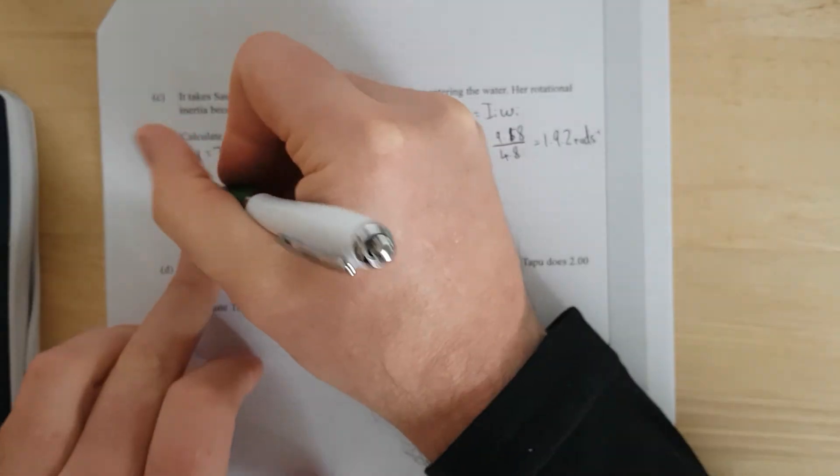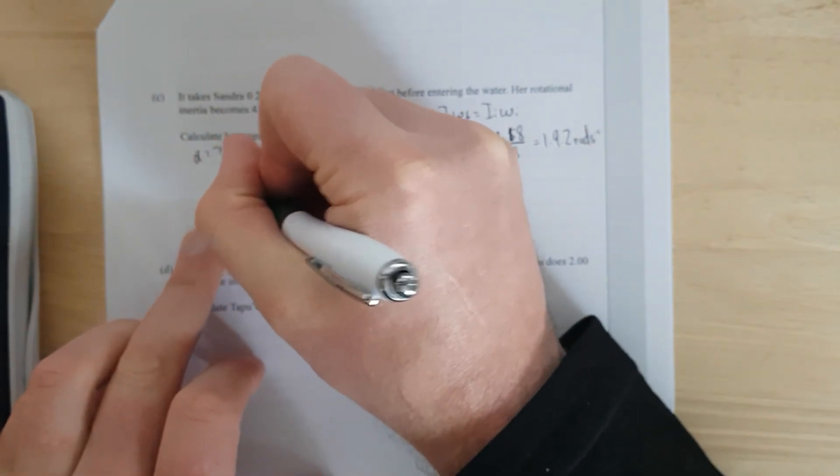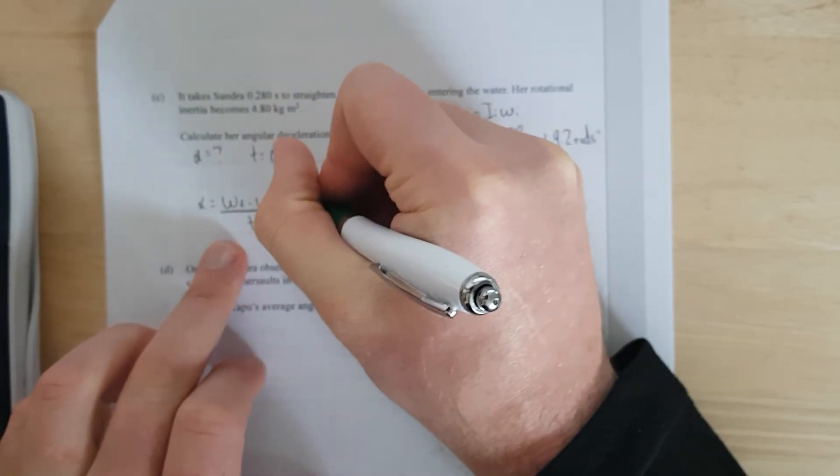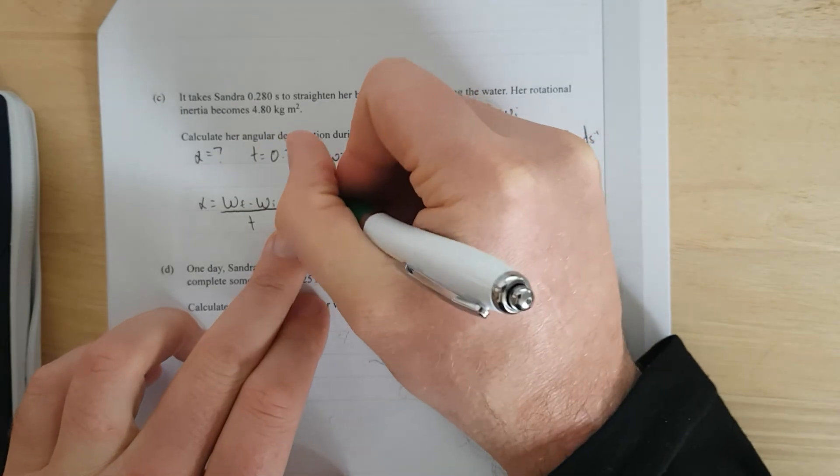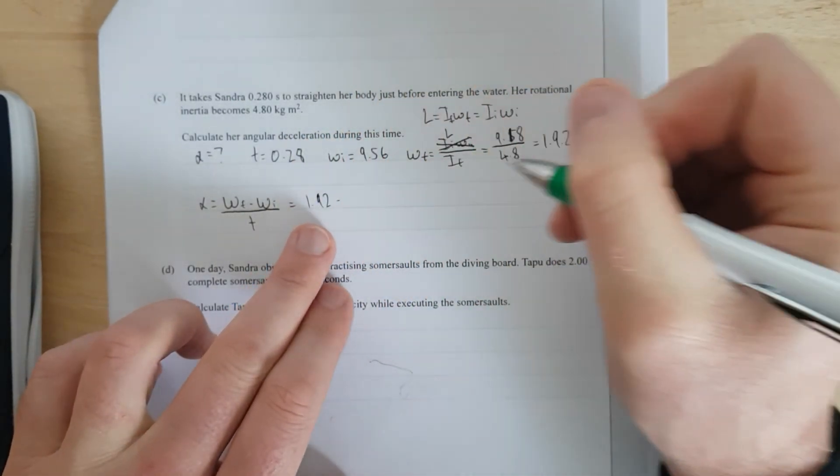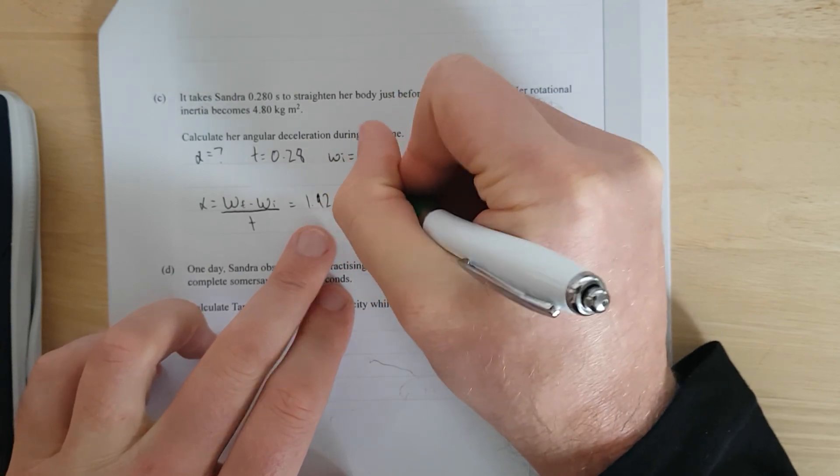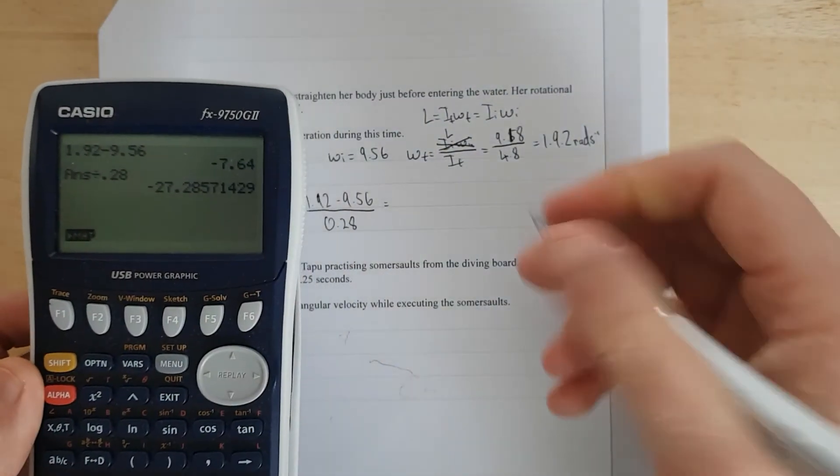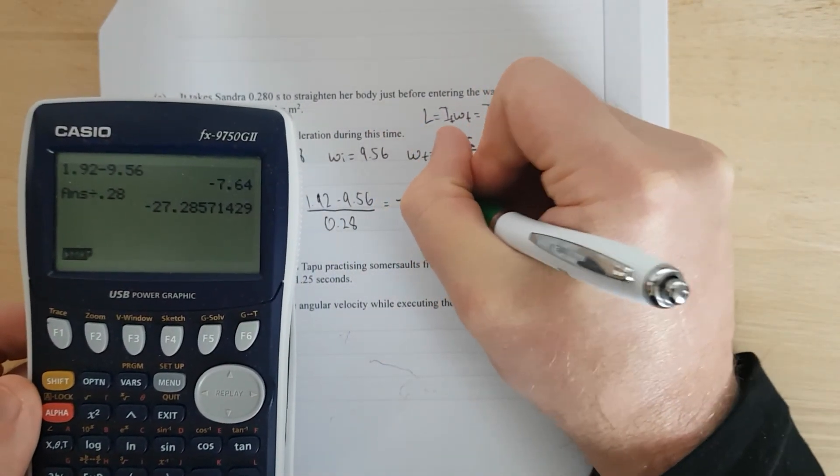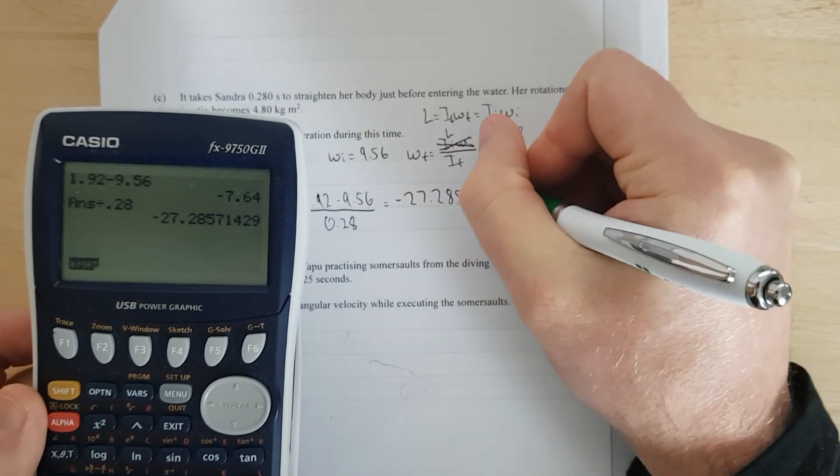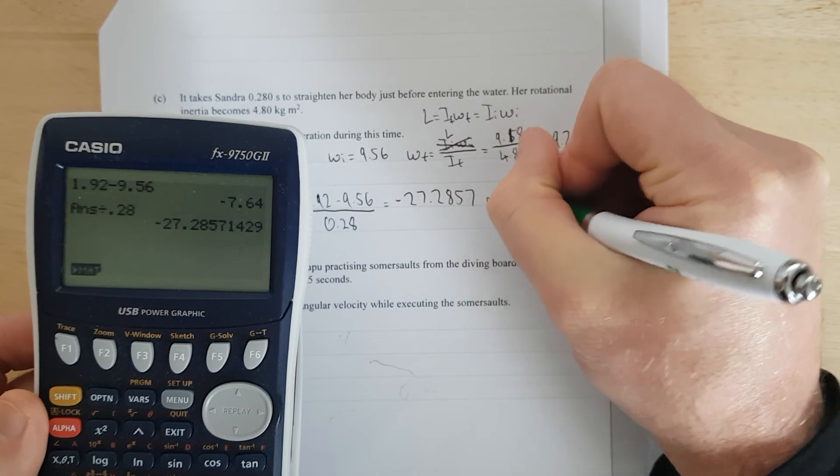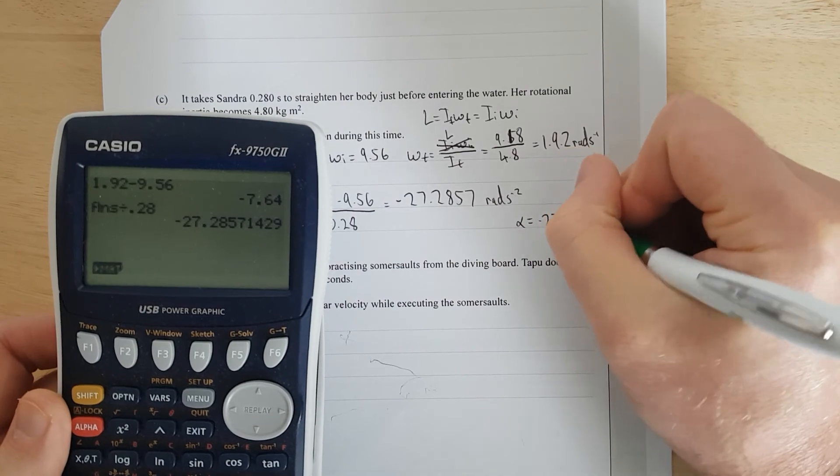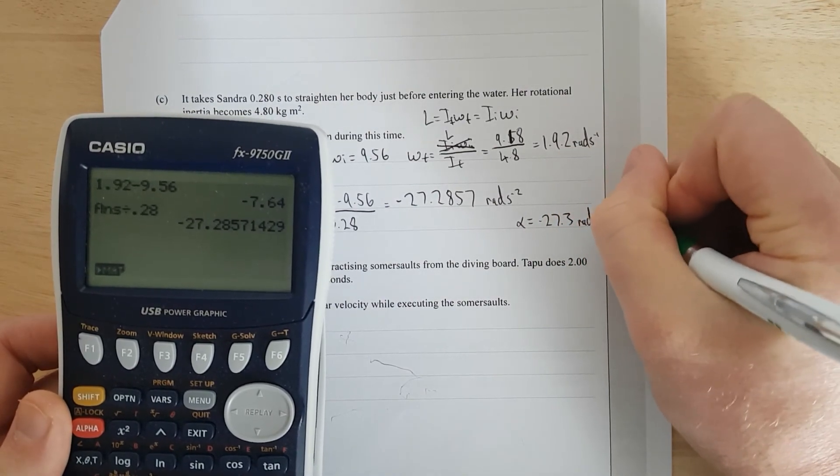Right, and the formula that we're going to use in your formula sheet, it's not too hard to find. Final minus initial because this is the average velocity over time, and that is pretty easy peasy. What have we got, 1.92 minus, what was, negative 27.2857 rads per sec negative 2. So in other words, alpha is equal to angular acceleration, negative 27.3 rads negative 2. Wazzah.